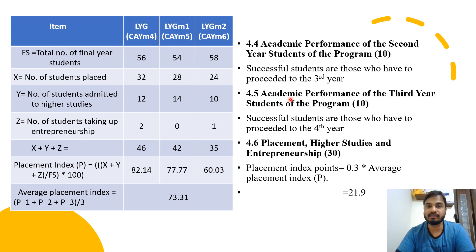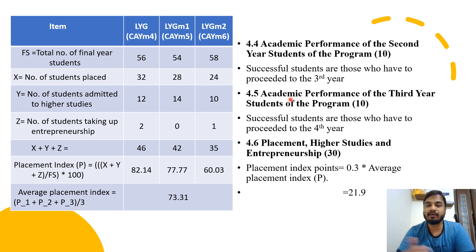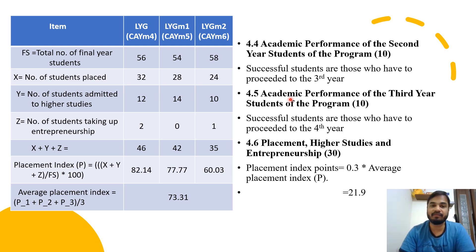So from 4.1 through 4.5, the pattern is consistent: greater the numbers, greater the marks. It is essentially a number game — how we leverage the data for our benefit.